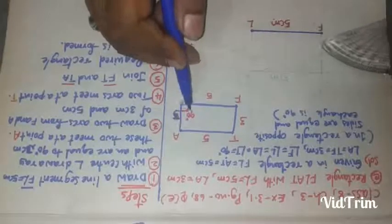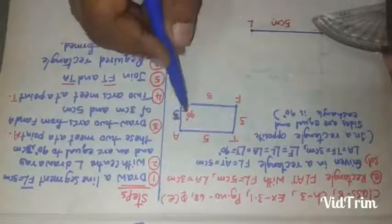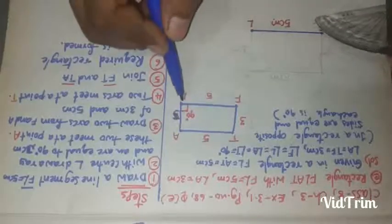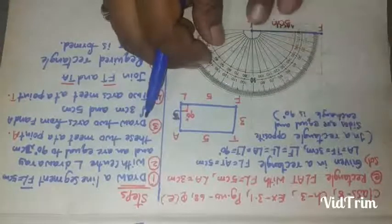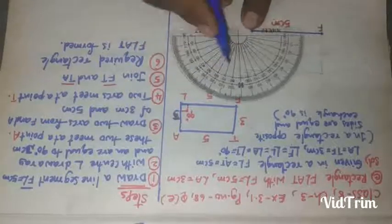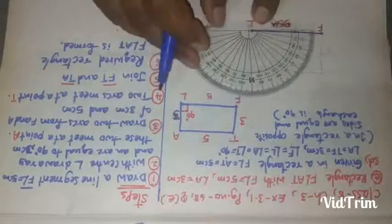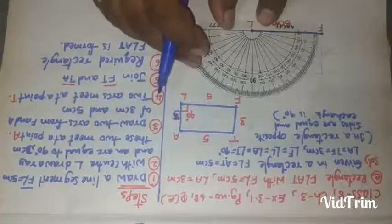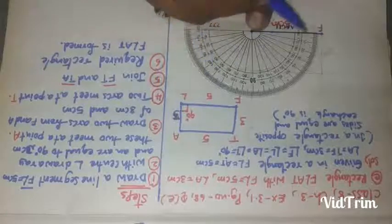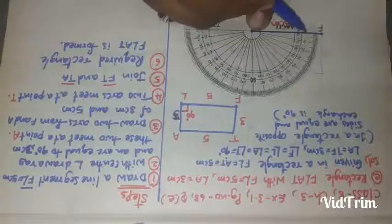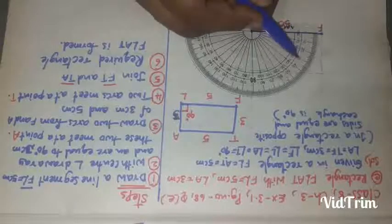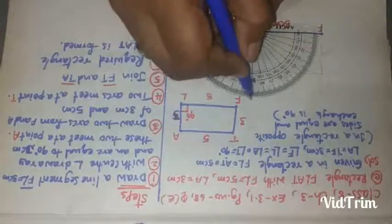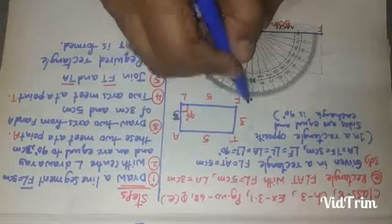Each and every angle is 90 degrees, and we are drawing near point L at 90 degrees. See the two lines of the protractor — this exact point should be on this point. Starting from 0, measure: 10, 20, 30, 40, 50, 60, 70, 80, 90 degrees. Keep a point there.